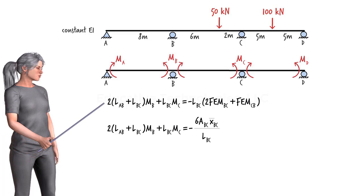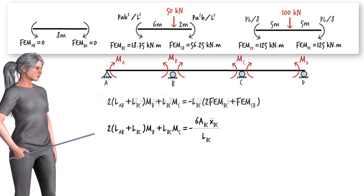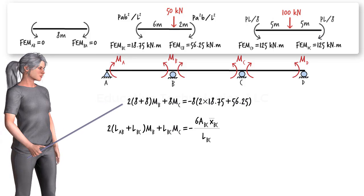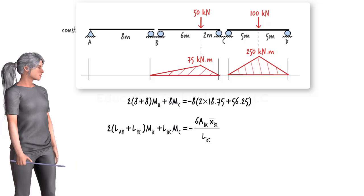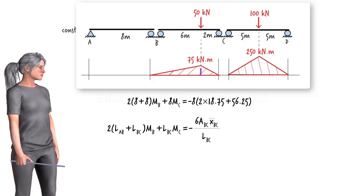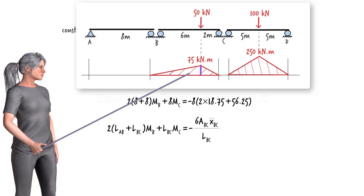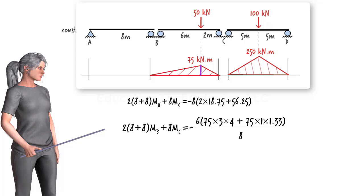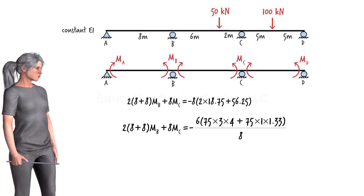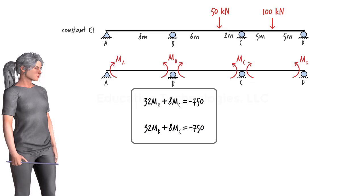Focusing on the fixed-end moment formula first for segment BC, we can calculate the fixed-end moments as shown. And since we know the segment lengths, the equation simplifies. For the alternative equation, the moment diagram for the isolated segment BC is shown. We can view the area as a combination of two right triangles: the area of the left triangle is 75 times 3, with its center 4 meters to the left of point C; the right triangle has area 75 times 1 with its center 1.33 meters to the left of C. Both equations yield the same relationship between the moments.